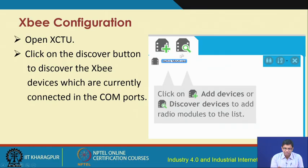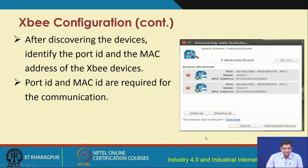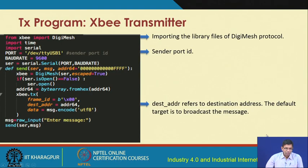Once you click the discover button, different modules are discovered and found. There could be many different modules discovered through this process. After discovering the devices, it is required to identify the port ID and the MAC address of the XBee devices, as these are required for communication. Based on the different devices discovered, the corresponding port ID and MAC ID will have to be found, and names assigned to these devices — for example, node 1 and node 3.